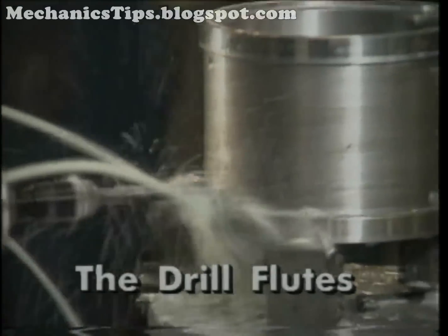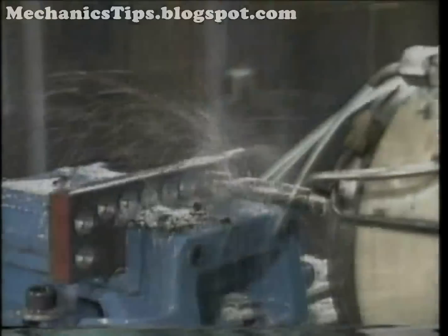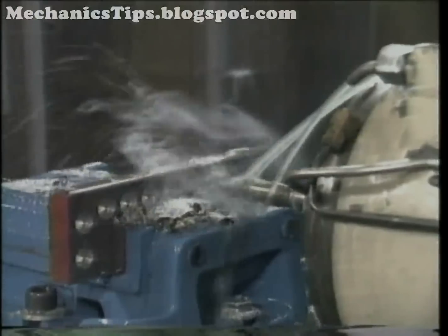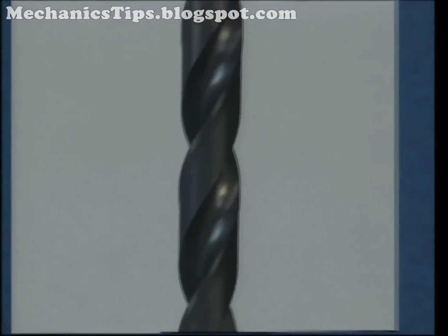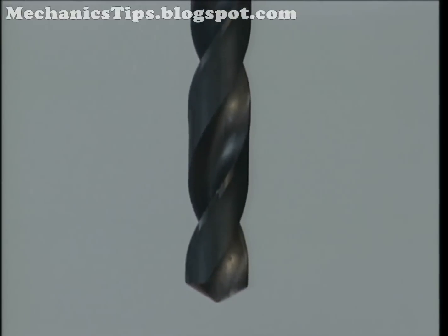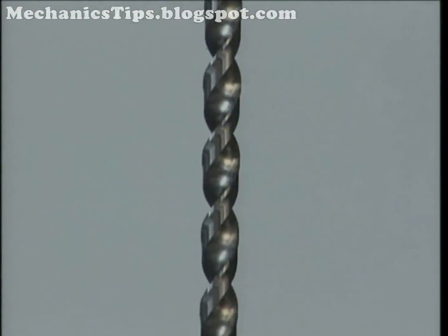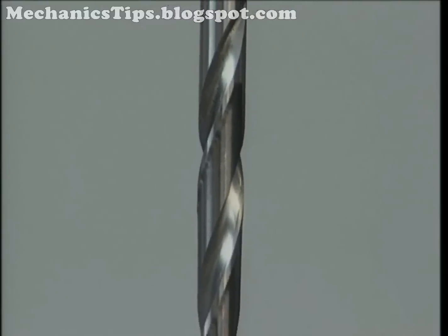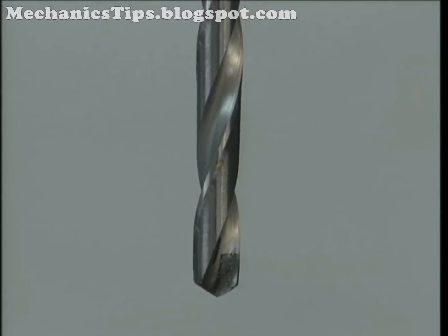Flutes let coolant into and carry chips out of the hole being produced. Both of these functions are essential for the drill point to continue cutting under the severe conditions of rotating at high speed in an enclosed space. The helix angle of a drill's flutes can vary dependent upon the material to be drilled. A standard helix angle of 25 to 33 degrees is optimal for steel and cast iron. A high helix or fast spiral angle of 35 to 40 degrees is used for low strength materials like aluminum, and a low helix or slow spiral angle of 15 to 20 degrees is used for drilling brass and plastics.